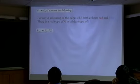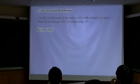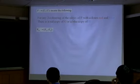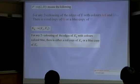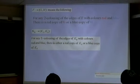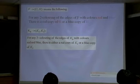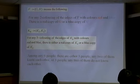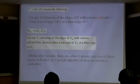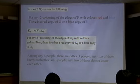For example, we have K6→(K3,K3). This means that if you color the edges of K6 by two colors, red and blue, there is either a red K3 or a blue K3. This is contained in many textbooks. Another way to say this is that among any six people, there are either three people that know each other or three people that don't know each other. Many of you probably know this result and how to prove it — it's an easy proof.